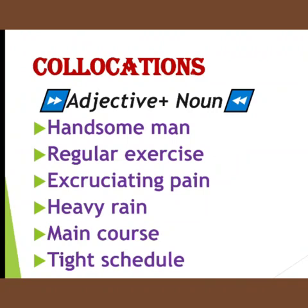Let's look at adjective plus noun collocations. For example: 'handsome man'. If I say 'pretty man' or 'beautiful man', that is wrong. The correct collocation is 'handsome man'. Even though pretty, beautiful, and handsome all mean good-looking, the correct collocation combination is 'handsome man'.